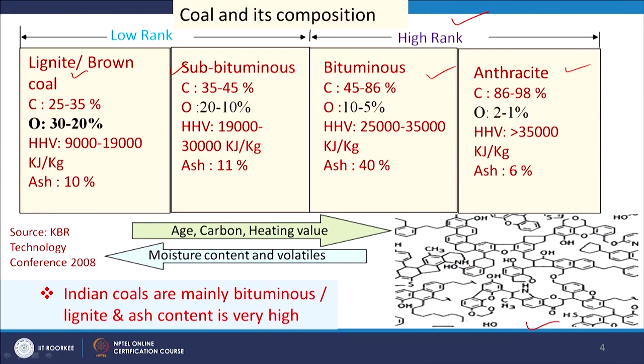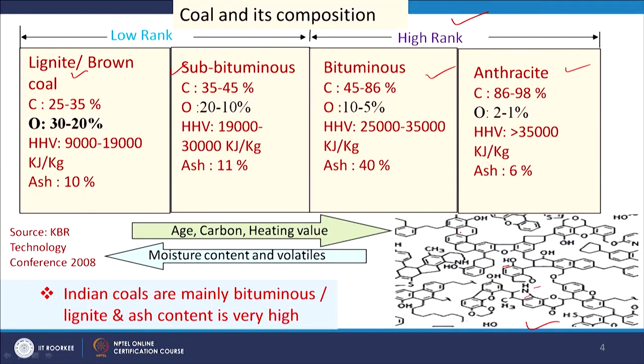Coal has a complex structure with a large number of aromatic rings, and phenolic, ketonic, and nitrogen-containing compounds are present in it. If we go to higher rank — i.e., greater age of formation — we get more carbon and more heating value. But in low-rank coal, moisture content and volatiles are higher. At the plant biomass stage we have more volatiles and more moisture, and these gradually reduce with increasing rank.